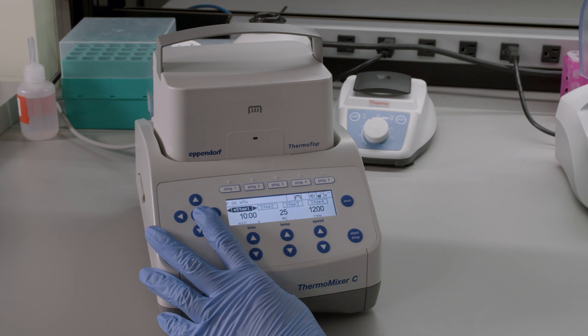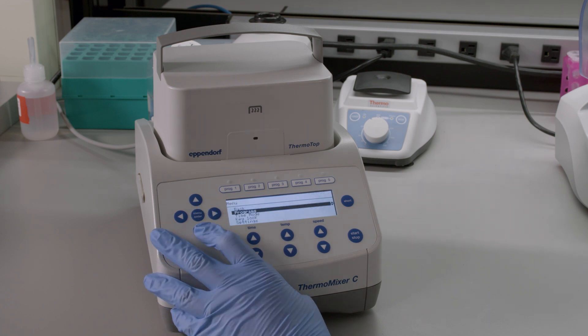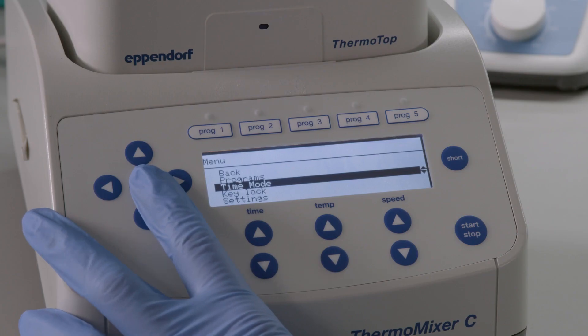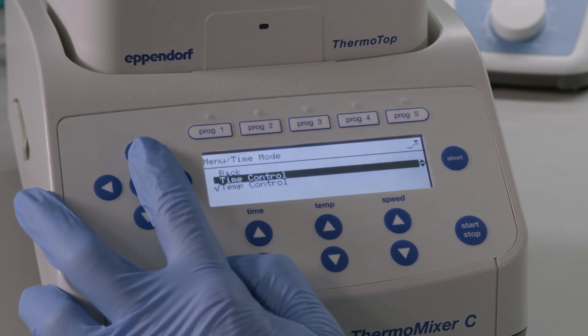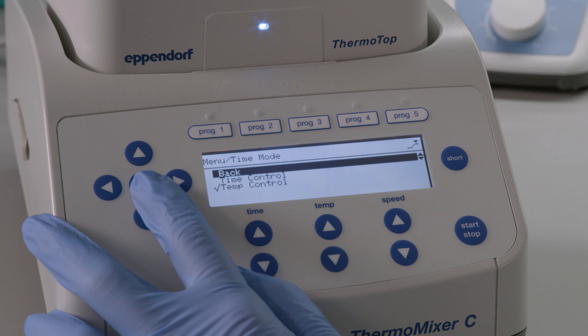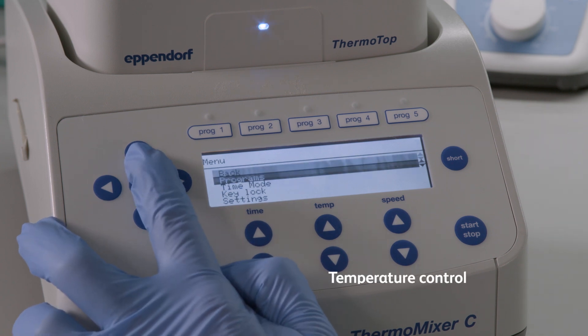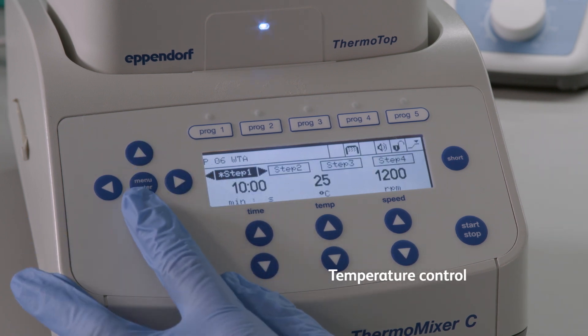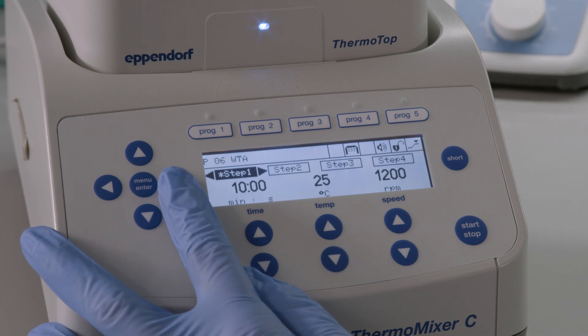In the next step, slowly raise the temperature of the reaction mix to produce a copy of the cDNA covalently linked to the bead. Before starting, make sure to set the ramp rates on your thermomixer at the maximum and set the time mode to temperature control. Incubate this reaction mix using four specific steps which will all include shaking at 1200 RPM.